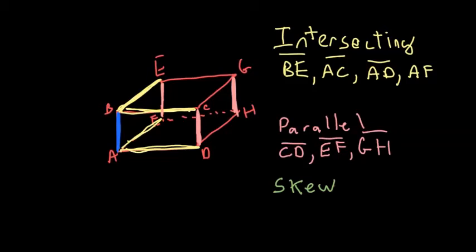And then the third term we have there is skew, and skew means it will never intersect and it's not parallel. So if you look down here at the bottom, DH is obviously never going to touch BA, but it's also not parallel to it, so that makes it skew.